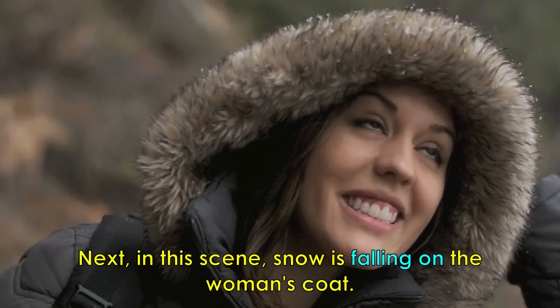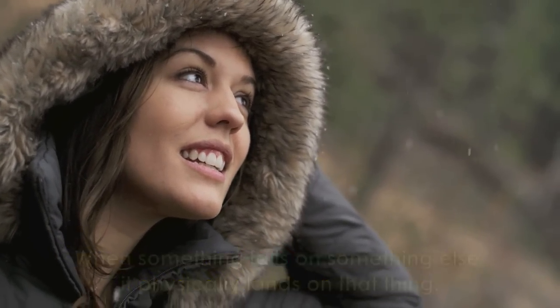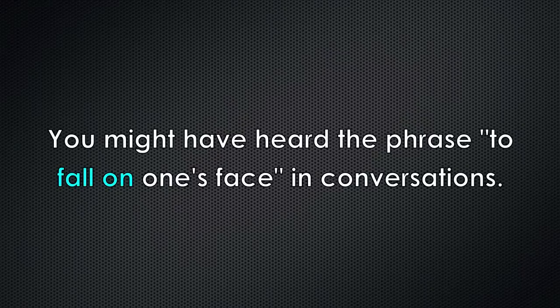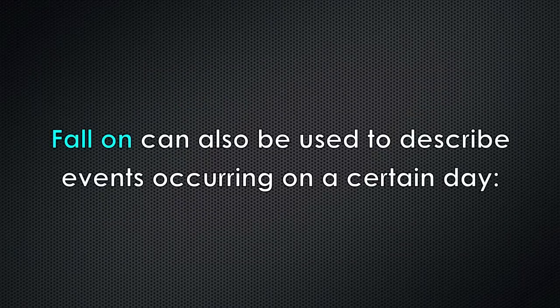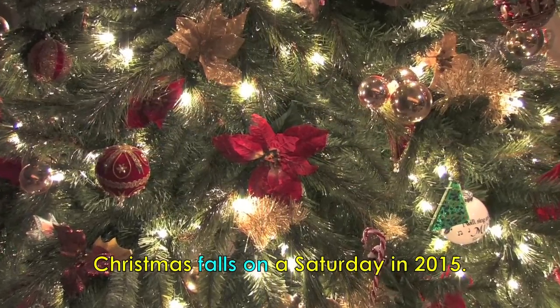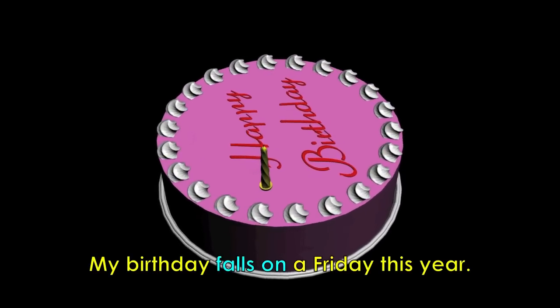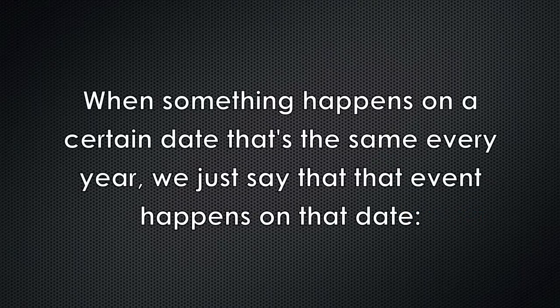Next, snow is falling on the woman's coat. When something falls on something else, it physically lands on that thing. You might have heard the phrase to fall on one's face — this happens when someone literally falls and hits the ground, injuring their face, or when they do something embarrassing, like forgetting to wear pants to an important meeting. Fall on can also be used to describe events occurring on a certain day. The idea of a lack of control is important here because you don't get to decide what day of the week your birthday falls on. When something happens on a certain date that's the same every year, we just say that that event happens on that date.